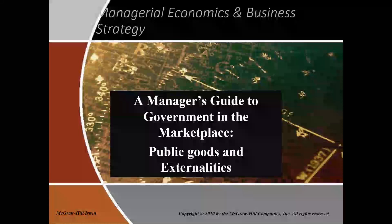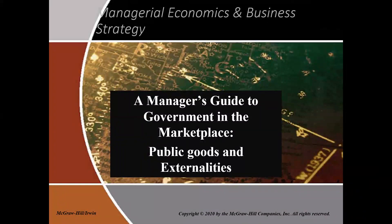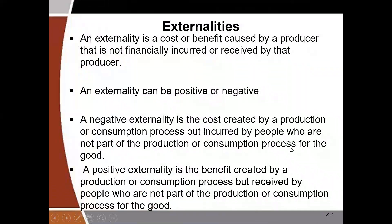A typical example of market failure caused by the demand side is public goods, whilst a typical example of market failure caused by the supply side is externalities. In this particular video, our discussion is going to center on externalities. So externalities is basically a market failure that is caused by the supply side.